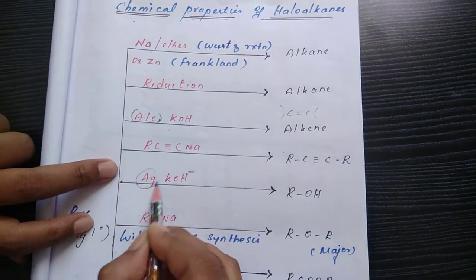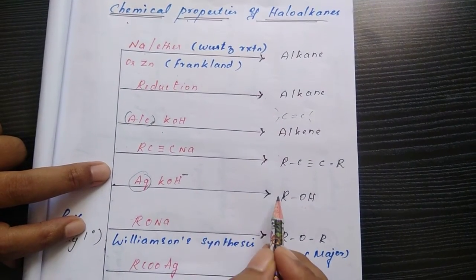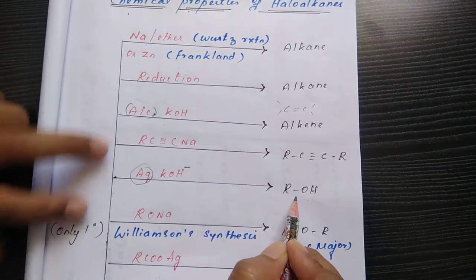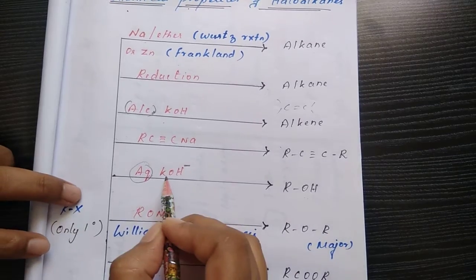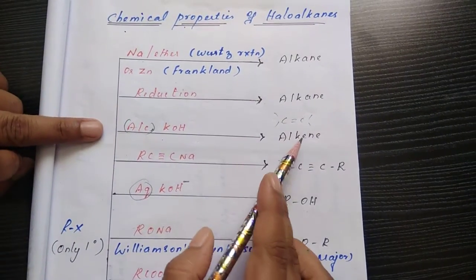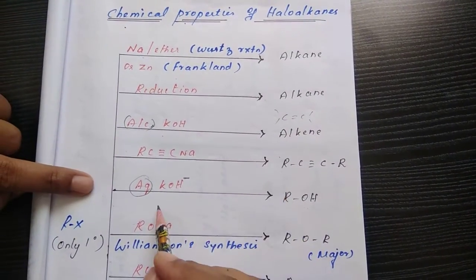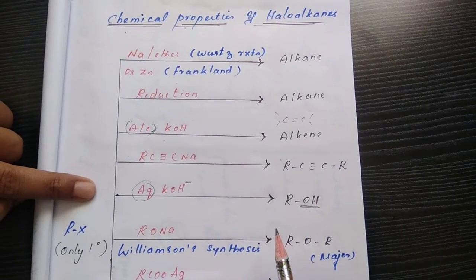If I am using aqueous, the reaction is based on substitution, nucleophilic substitution. This is the solvent influence. Here we are using alcoholic, we get elimination type of reaction. Aqueous, it gives substitution type of reaction.